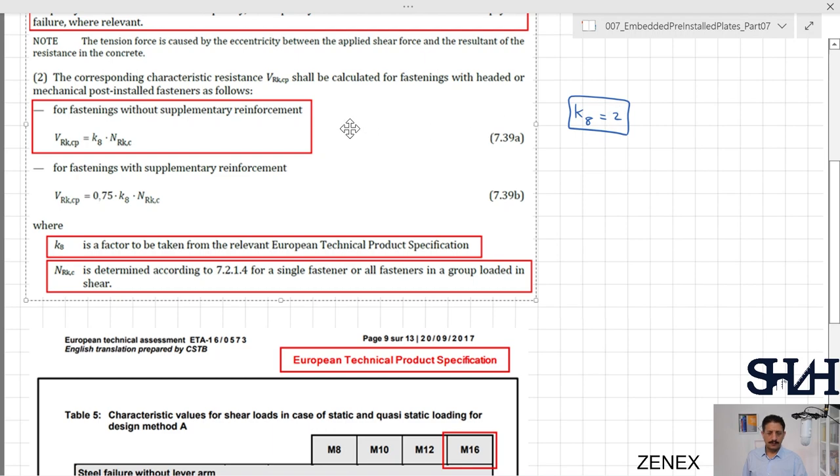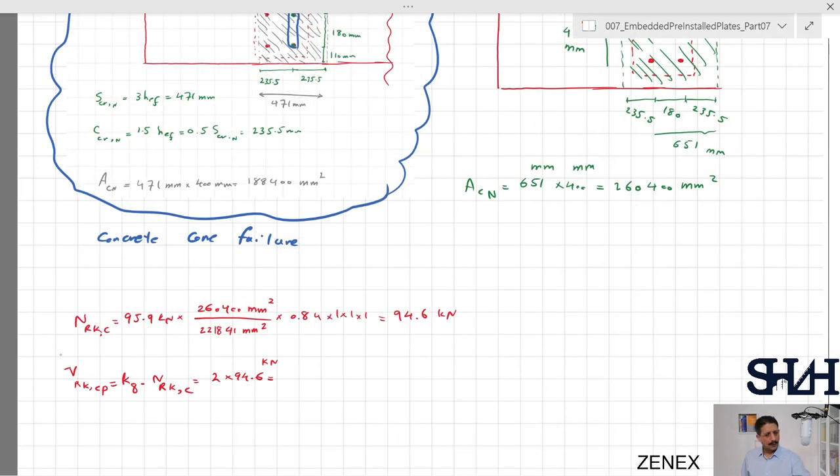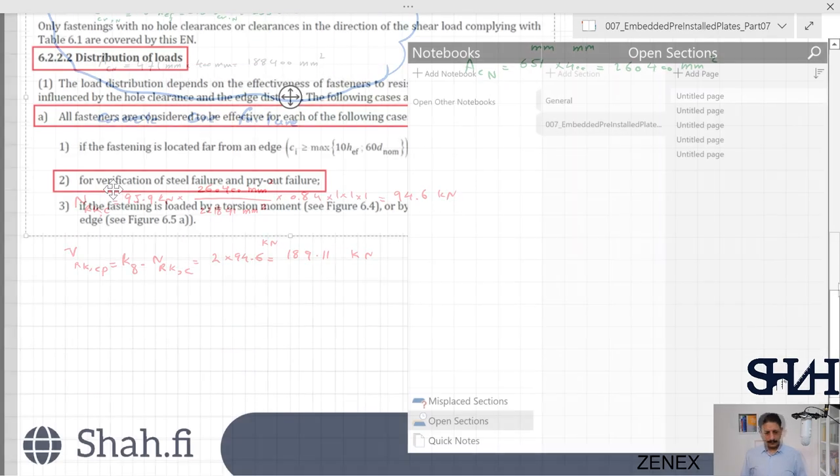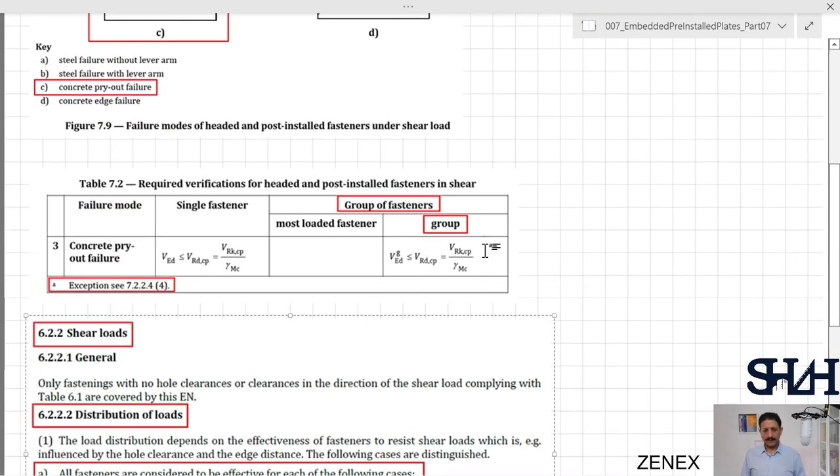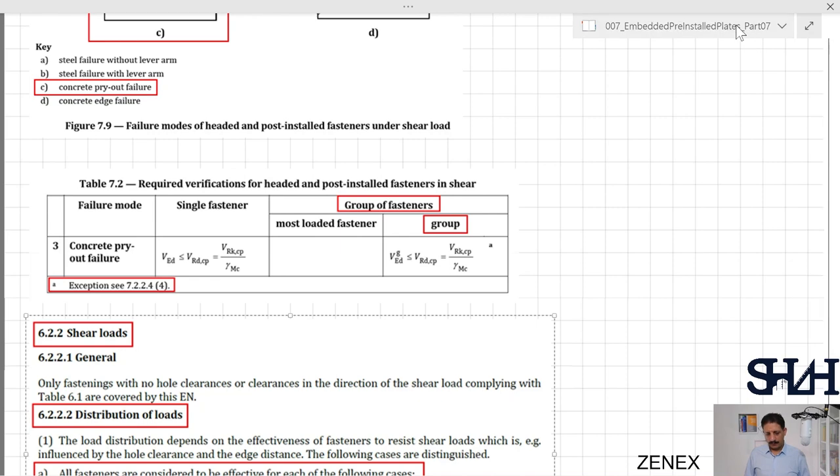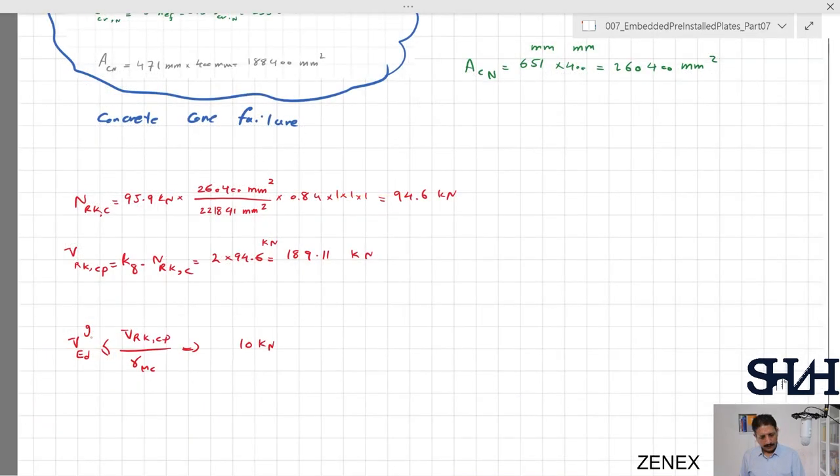Coming back to equation V_Rk,cp: k_8 which is 2 times N_Rk,c times 2 equals 189 kilonewtons. Then we need to check the given equation V_Ed,group which is 10 kilonewtons needs to be less than V_Rk,cp divided by gamma_Mc.